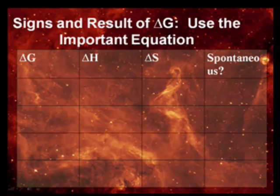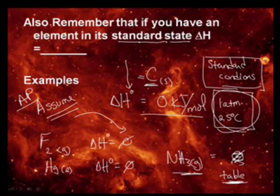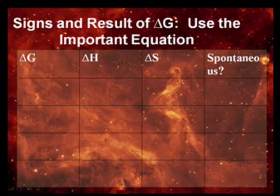By the way, on the AP test, if delta H is supposed to be zero because it's an element, they're not going to tell you that. They're going to assume you know that. And some people go, I don't have enough information to solve the problem. Yes, you do. It's zero. So, the AP test assumes you know this answer. If you do not know this answer, then you're going to really have a hard time. So, when you're doing it in class, you're going to look it up in the book. But on the AP test, they do not give you the table. So, watch that.